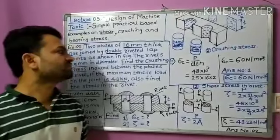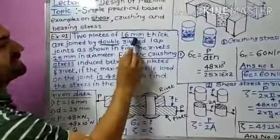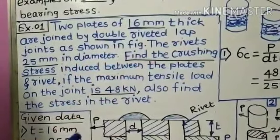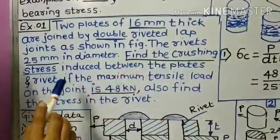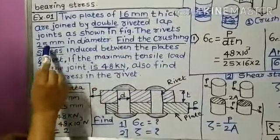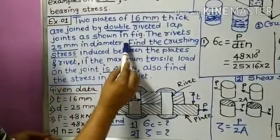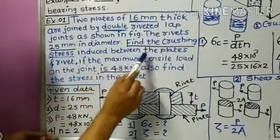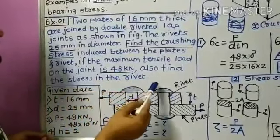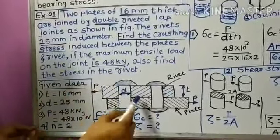Let's start with the first problem. Two plates of 16 mm thickness are joined by a double riveted lap joint. As shown in the figure, the rivets are 25 mm in diameter. Find the crushing stress induced between the plate and rivet if the maximum tensile load on the joint is 48 kN, and also find the shear stress in the rivet.